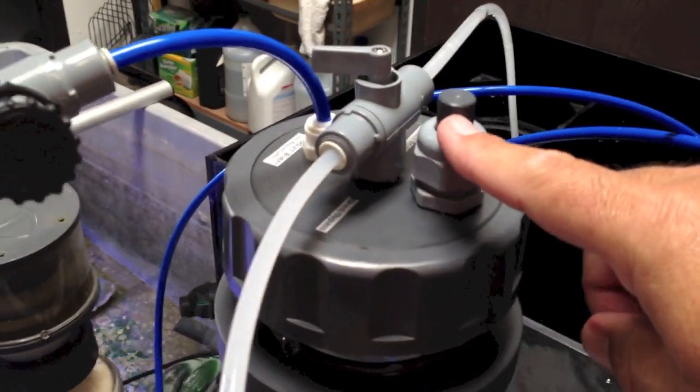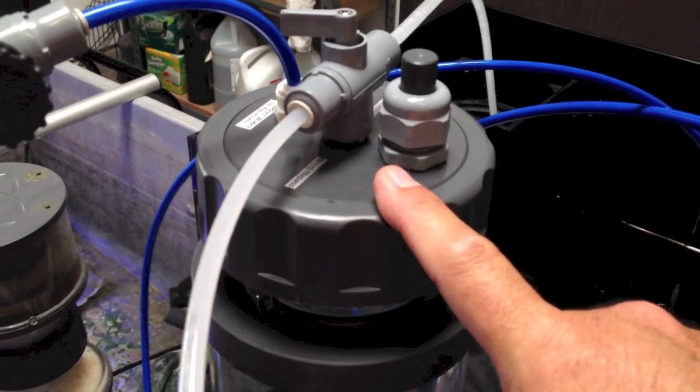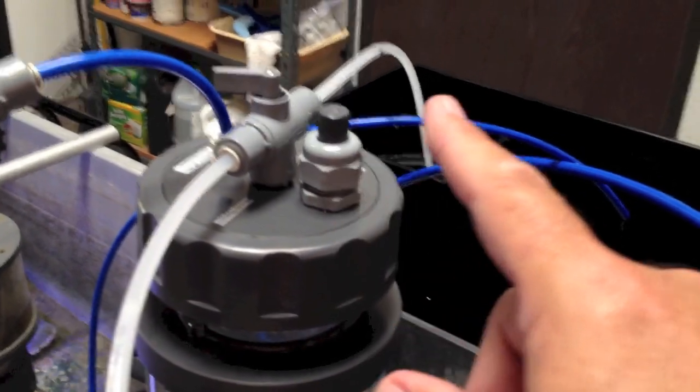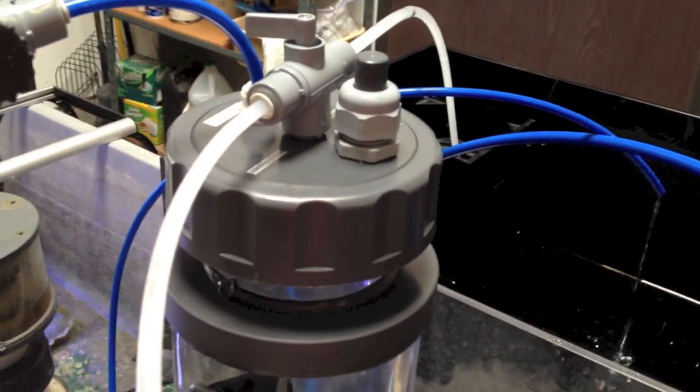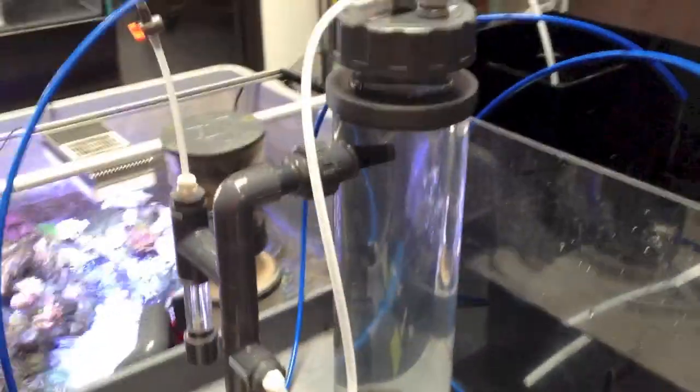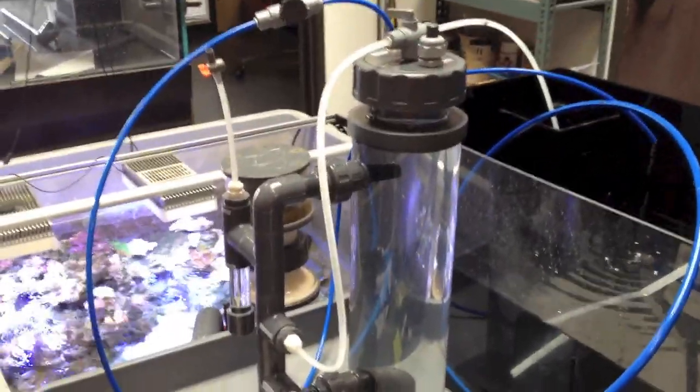Of course, we do recommend using the pH probe holder for your pH probe. You really should have one on the reactor controlling the CO2 going into the CO2 feed. And then a separate probe monitoring the pH in the tank. So that if the pH drops below your set point, 8.2, 8.3, it'll shut off the CO2 to the reactor. Of course, that's going to stop calcium dissolution, but it's also going to maintain your pH in your system, which is really important.